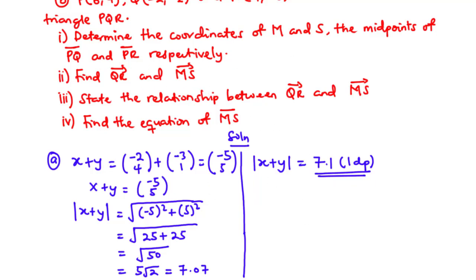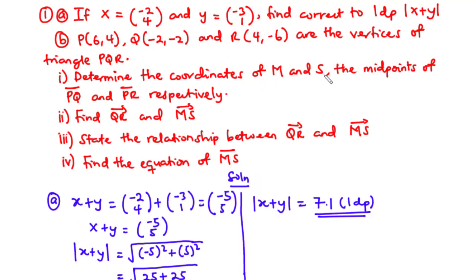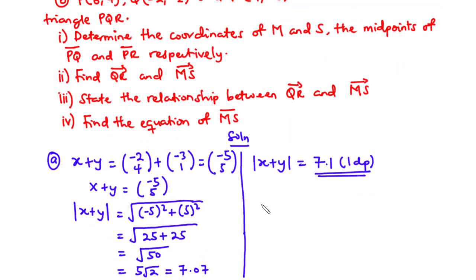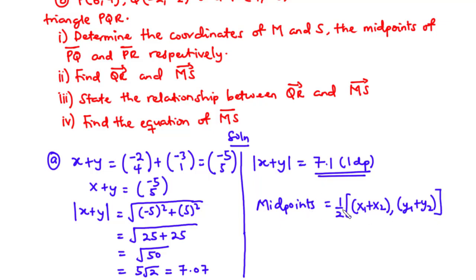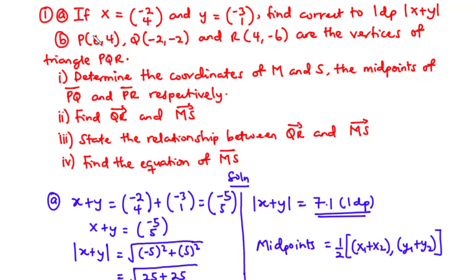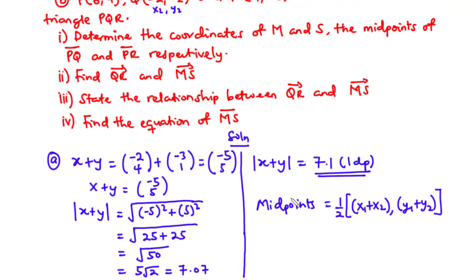Now let's solve for b-i. We are to determine the coordinates of M and S, which are the midpoints of lines PQ and PR respectively. M is the midpoint of line PQ and S is the midpoint of line PR. The midpoint between two points is given by: (½(x₁ + x₂), ½(y₁ + y₂)). We take P as (x₁, y₁) and Q as (x₂, y₂).